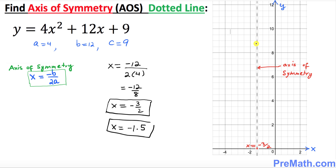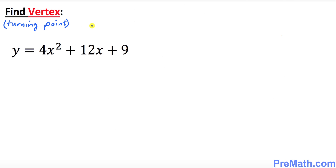On the graph, the axis of symmetry is a dotted line — a perpendicular line that passes through the x-axis at x equals negative 3 over 2, or negative 1.5. Now in this step we are going to find the vertex, which is the turning point.